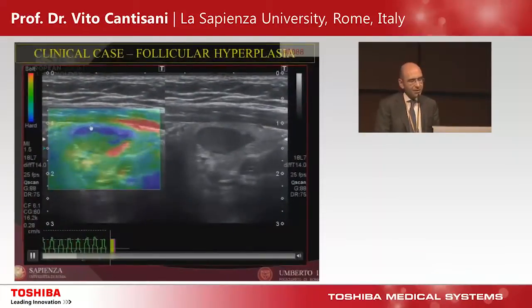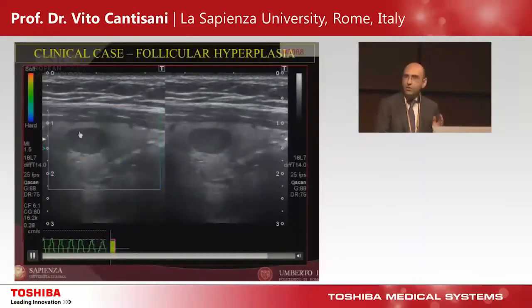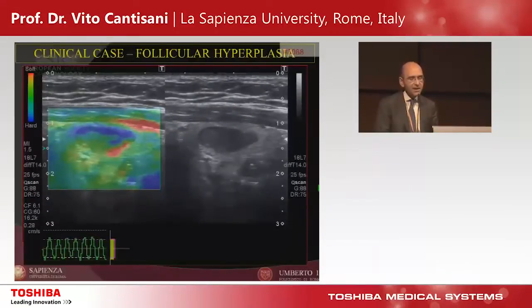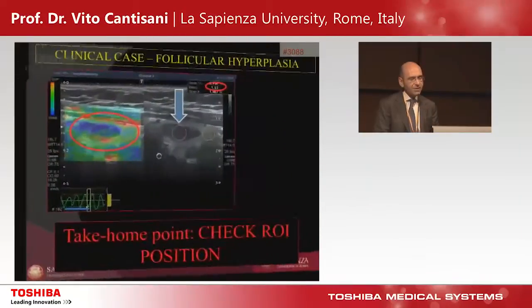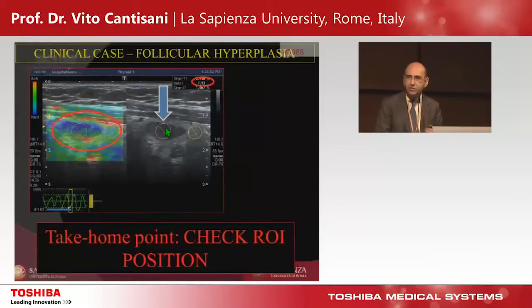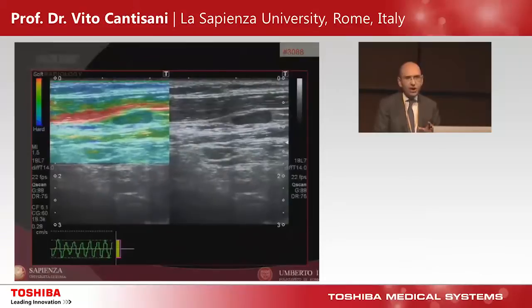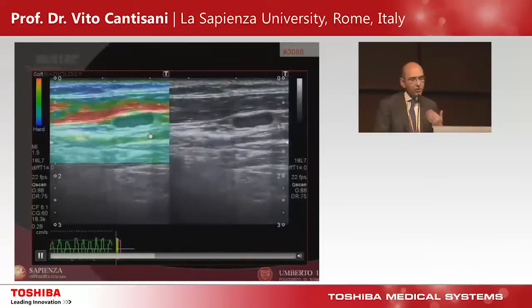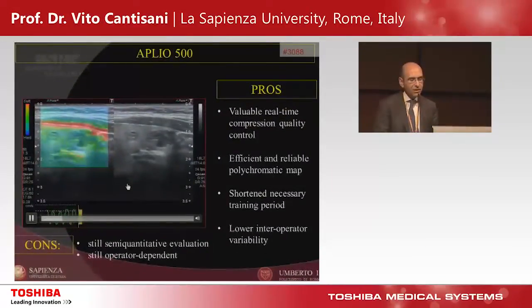Look at this multilayered lesion — I call this the 'rainbow sign,' meaning it is neither purely cystic nor purely solid, but a mixed lesion. If you place the ROI here, you get 2.14, which is in the gray zone. But if you place the ROI within the nodule but not including all the tissue, you obtain different values. So an important point: always check the ROI position. You can also follow lymph nodes in a one-stop evaluation.